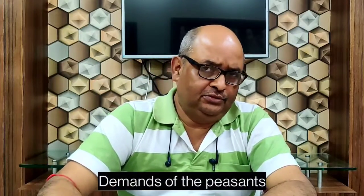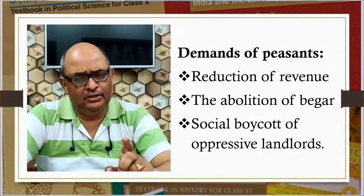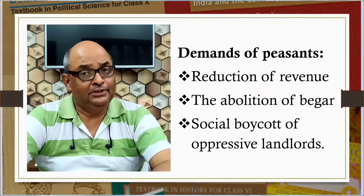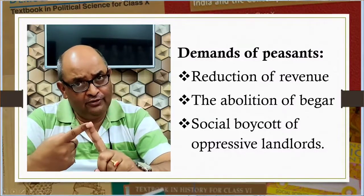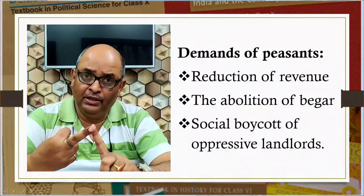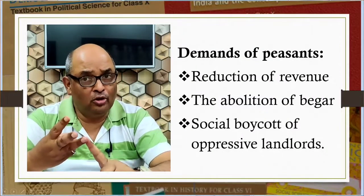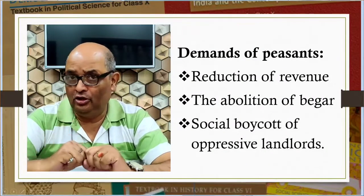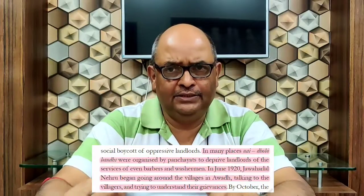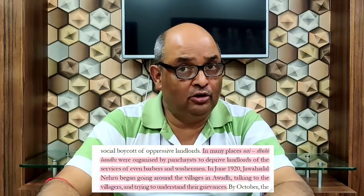So what you find here is that the peasants were against the zamindars and taluqdars, and not in direct confrontation with the British. The demands of the peasants included reduction of revenue, the abolition of begar, and the social boycott of oppressive landlords.